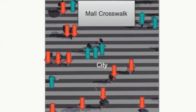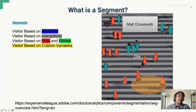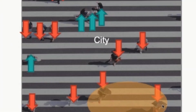Or entries — the green arrows are focusing on folks who are going into the mall or the mall area. And then also, we can have visitors based on a custom variable. For this example, I used a custom variable of umbrellas. As we see, there are two folks down here that are using the umbrella and would be in that segmentation.